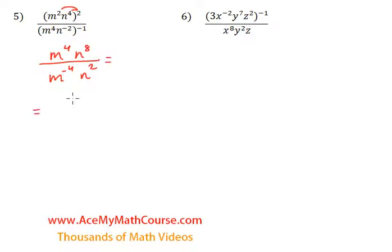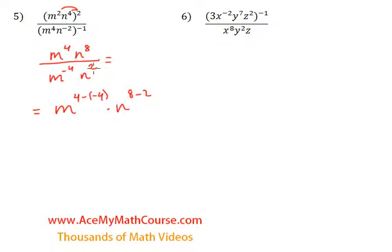Now what can we do? We have m with the same base, and we're dividing them so we can subtract the exponents. So we have m to the power of 4 minus negative 4, times n to the power of 8 minus 2. We subtract the exponents. So 4 minus negative 4 is 8, because subtracting a negative number is equivalent to adding. And we're still multiplying m to the power of 8 by n to the power of 8 minus 2, which is 6. So that's it.